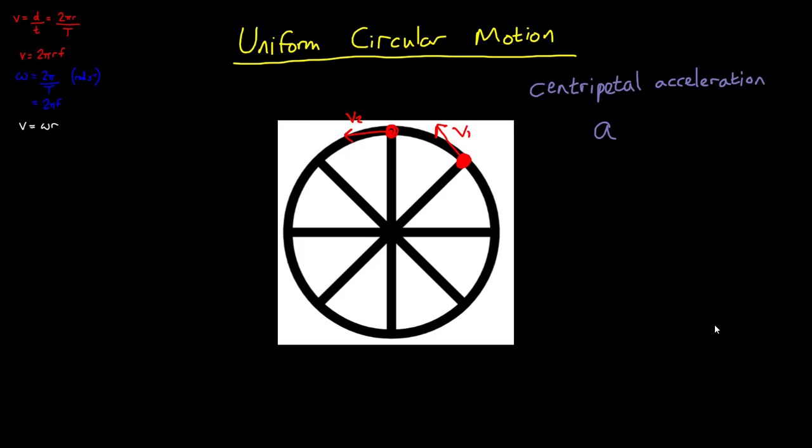We call this centripetal acceleration. Without this acceleration, the object would fly off in a straight line. So the centripetal acceleration must be acting towards the centre of the circle. In circular motion, the acceleration is always towards the centre of the circle. In fact, centripetal means centre seeking.